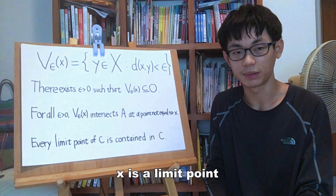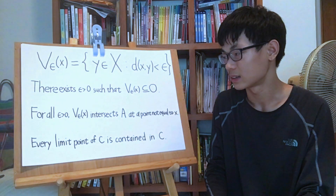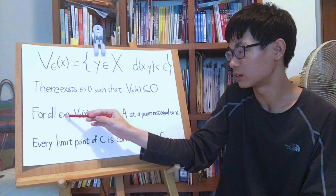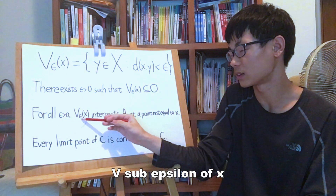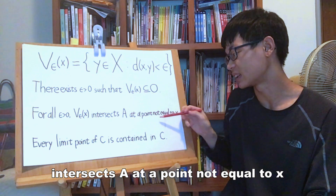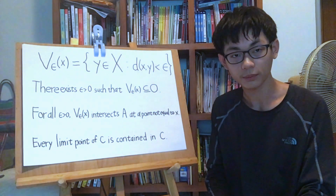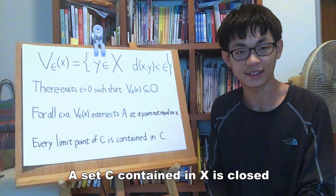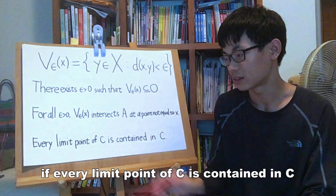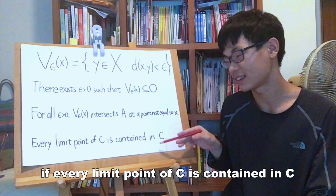X is a limit point of a set A contained in X if for all epsilon greater than 0, V_epsilon(x) intersects A at a point not equal to x. A set C contained in X is closed if every limit point of C is contained in C.